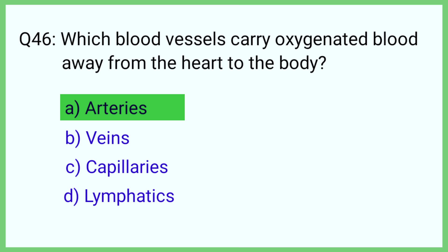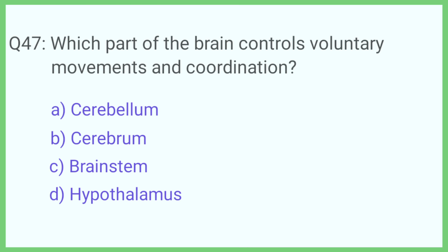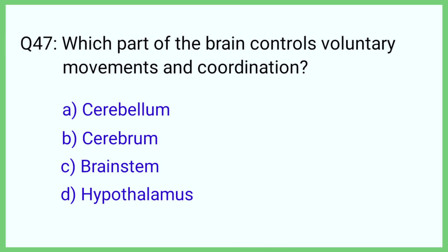Question number 47. Which part of the brain controls voluntary movements and coordination? The correct answer is option A: Cerebellum.